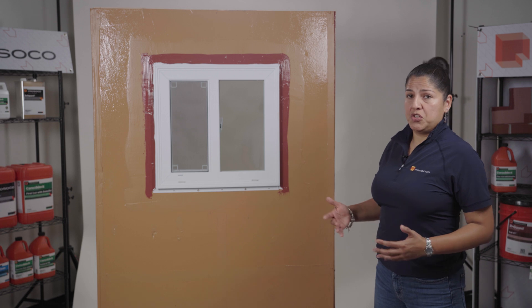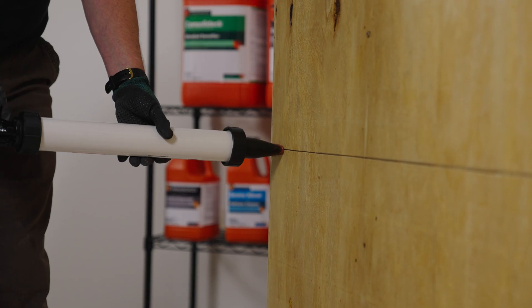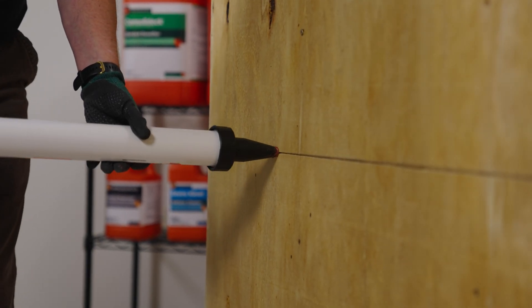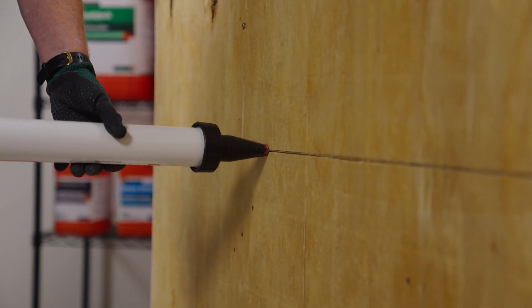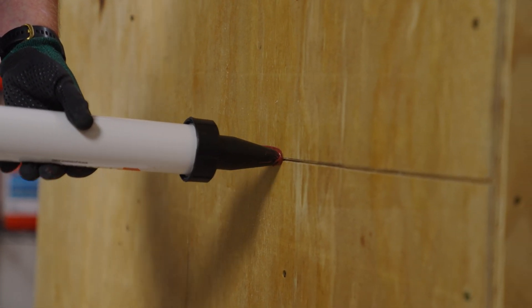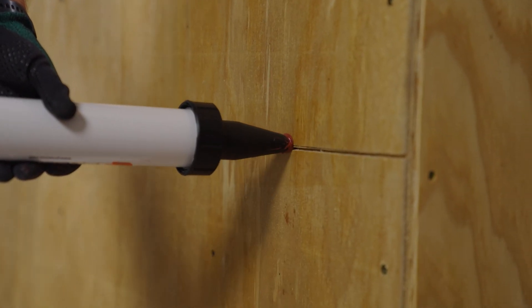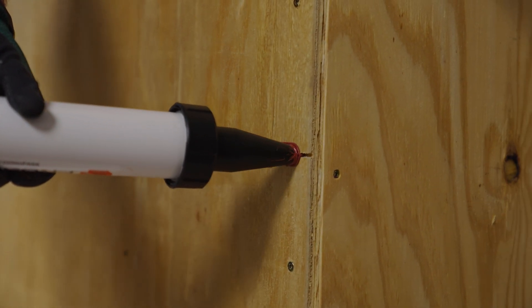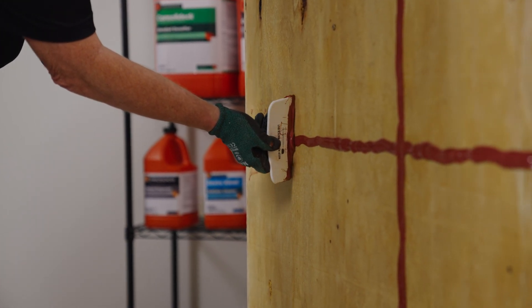Another key application for Fast Flash is board joints. Wherever you have two substrate boards, whether it be gypsum, plywood, or OSB, where they meet, that is a joint you need to treat. You would run a bead of the gun-grade Fast Flash across the joint and strike it with a Bondo knife.